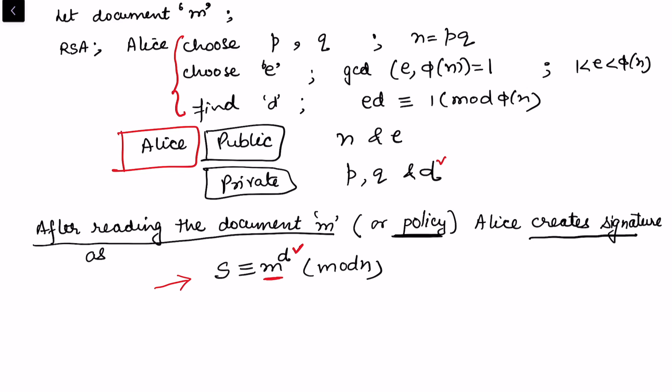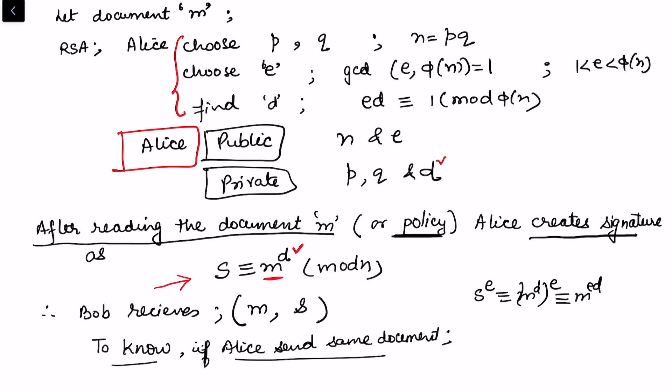Now this s is communicated to Bob. So Bob receives the original document m and Bob also receives the signature s. To know that Alice sent the same document, Bob calculates s to the power e, which is congruent to (m^d)^e, that is congruent to m^(ed), which is congruent to m mod n. You can see this is exactly the same process what we did in RSA but in the reverse order.